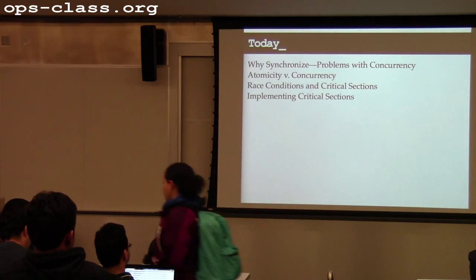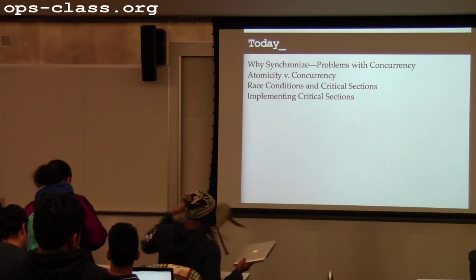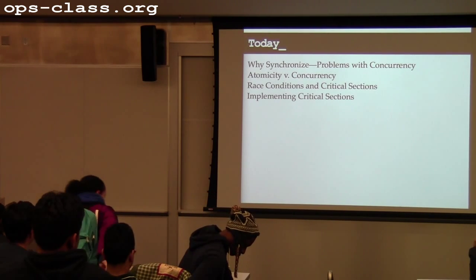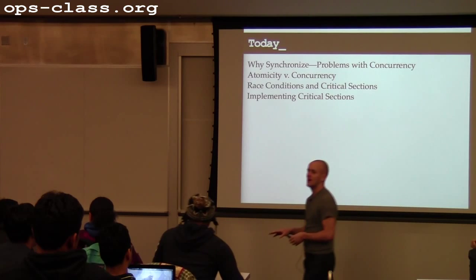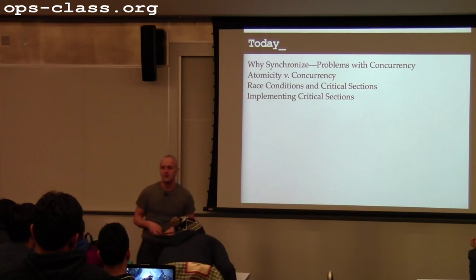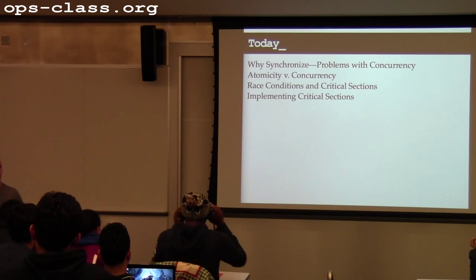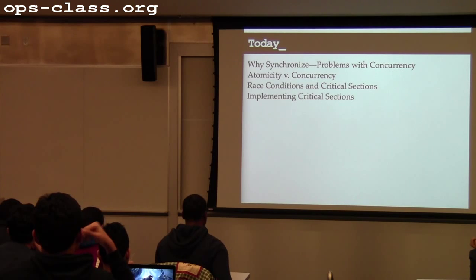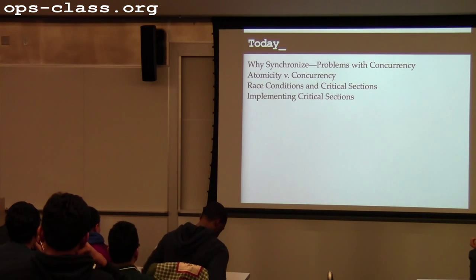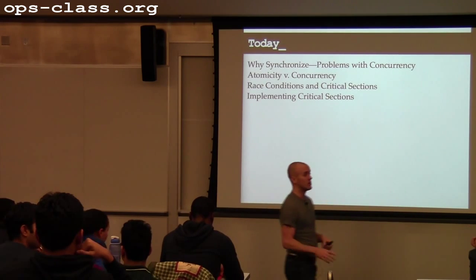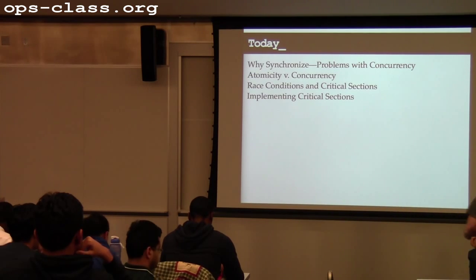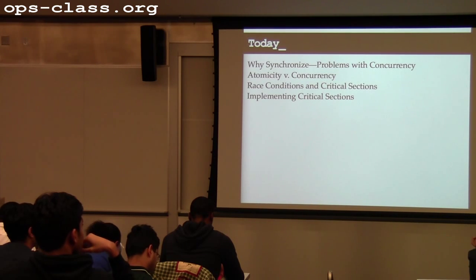So last week we started talking about threads. We spent most of the week talking about threads and how the operating system abstracts the CPU. This week, and maybe a little bit of next week, and assignment one are about some of the primitives and support that the operating system includes for dealing with the consequences of threading — the problems and challenges associated with threading. Programming multi-threaded applications successfully is important to really writing any modern software code.